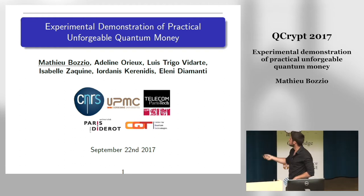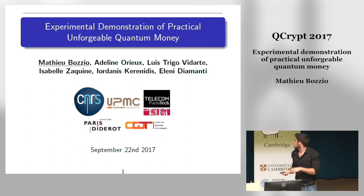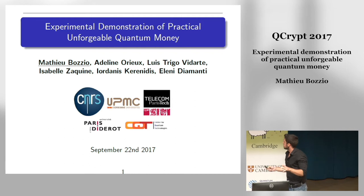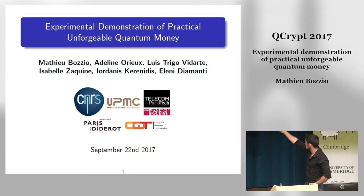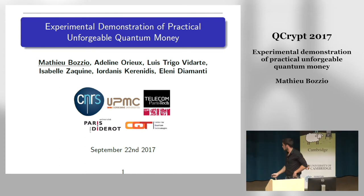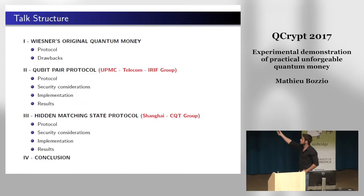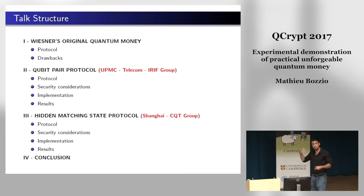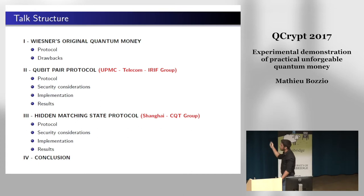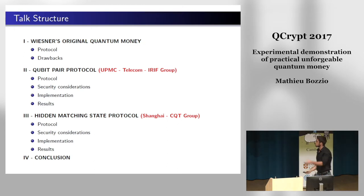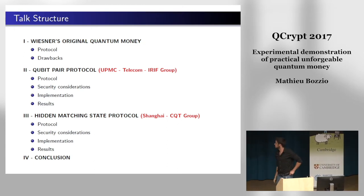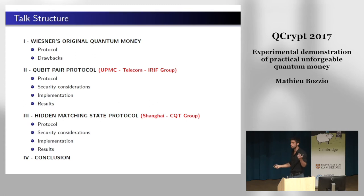Welcome to Q-Crypt. I'll be presenting the two first experimental implementations of quantum money. The first one is by the Paris Group, and the second experiment is by the Shanghai Group. The talk structure is pretty simple: I'll give an overview of Wiesner's original protocol and its drawbacks, then go through the qubit pair protocol, which is the Paris protocol, then the hidden matching state protocol, which is the Shanghai protocol, and finally a comparison of the two.